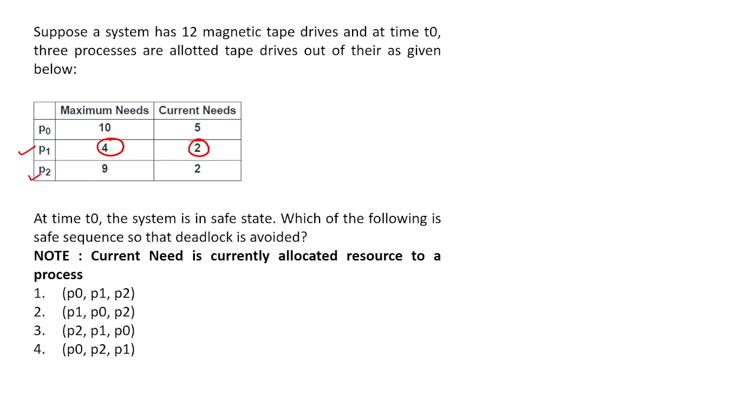Out of this we have to find - at time t0 the system is in safe state. They have told us the system is in safe state, that means a safe sequence will be there. Which of the following is the safe sequence so that deadlock is avoided? Remember one point: whenever they say safe state, that means there must be a safe sequence, and in this question we have to find out that safe sequence.